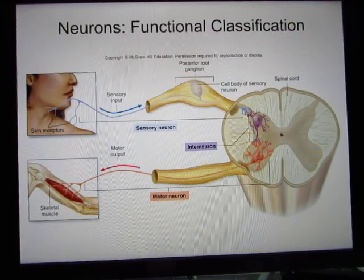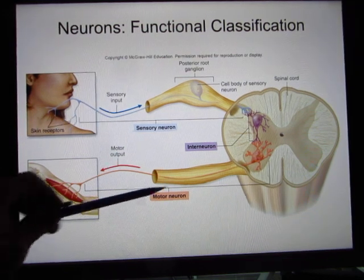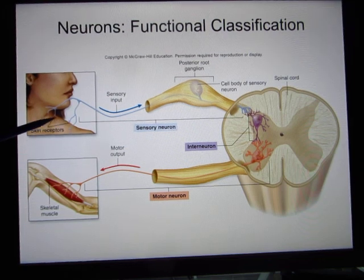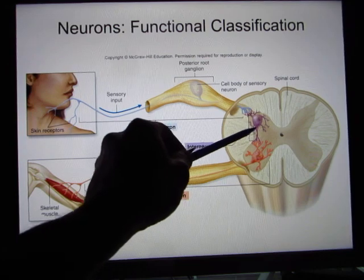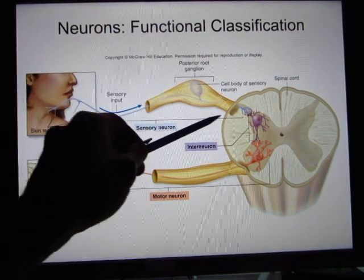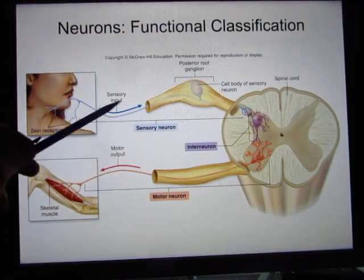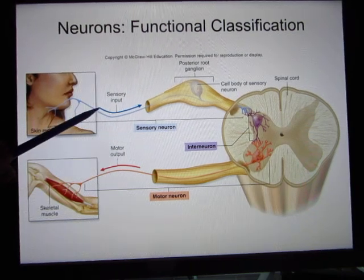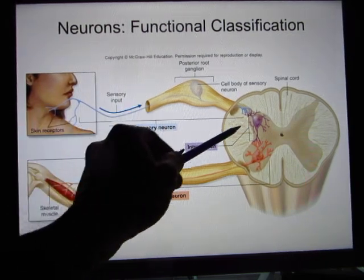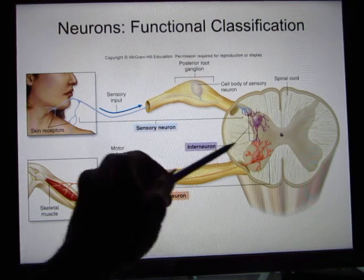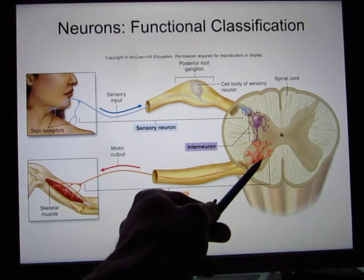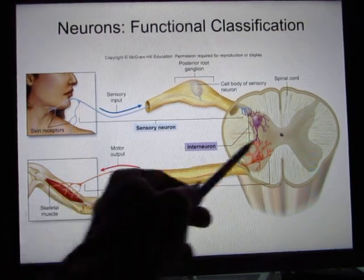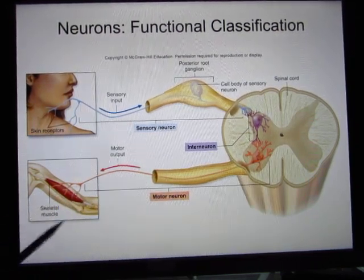Neurons can also be categorized based on function. Sensory neurons pick up signals from the outside and send them from the peripheral to the central nervous system. Interneurons stay within the central nervous system — in the spinal cord and brain. Motor neurons send signals out to control your skeletal muscle.